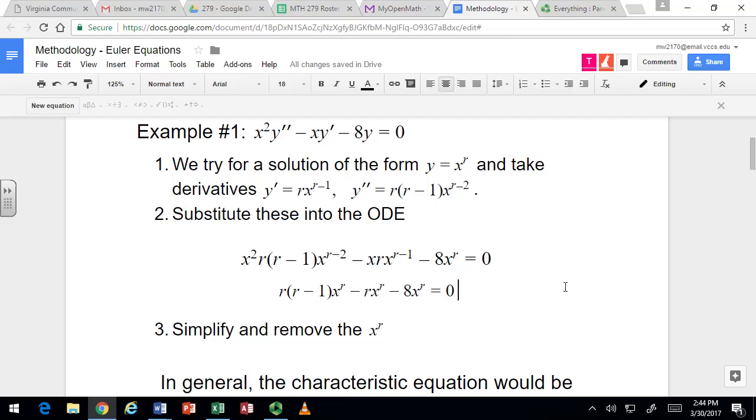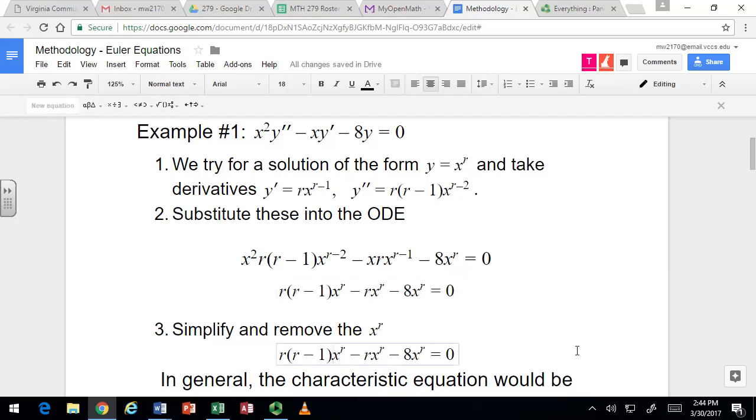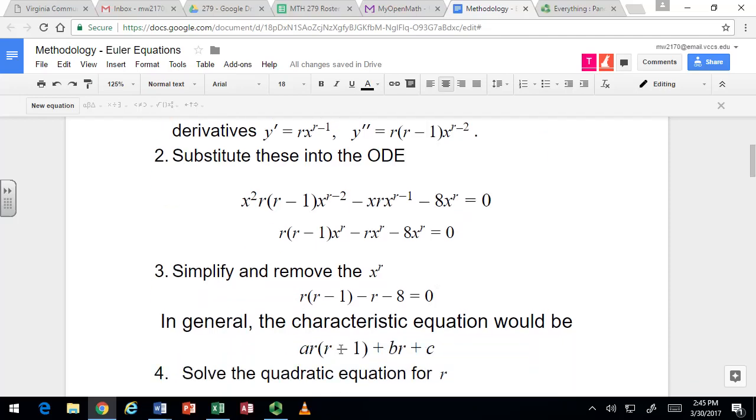That means we can factor off that x to the r and remove it from the equation. And what's left is referred to as the characteristic equation for the Euler ODE. And you could jump from the differential equation right to this form of the characteristic when you start to be more familiar with how it always works. Because it's just going to be A times r times r minus 1 plus B times r plus C equal to 0.